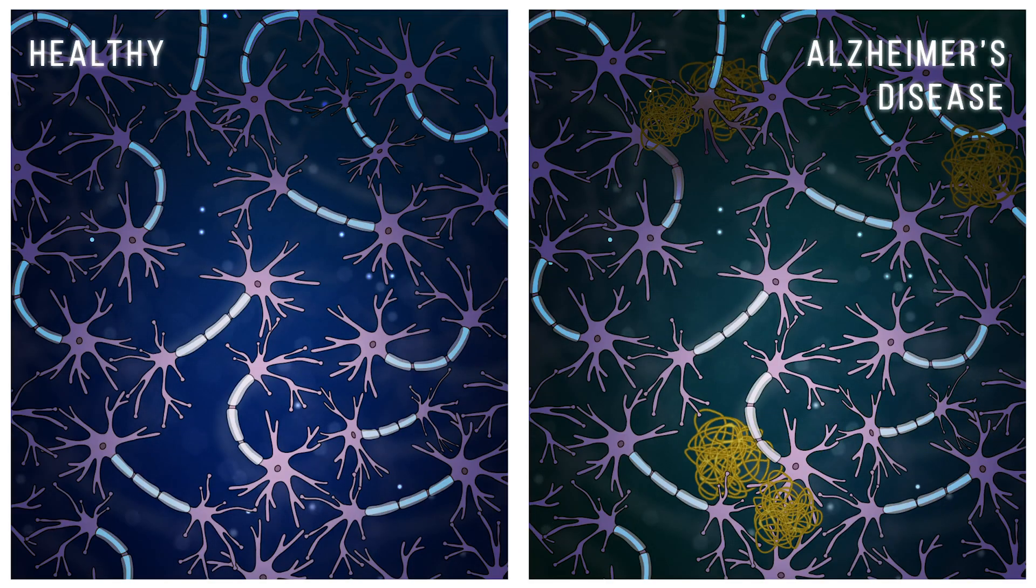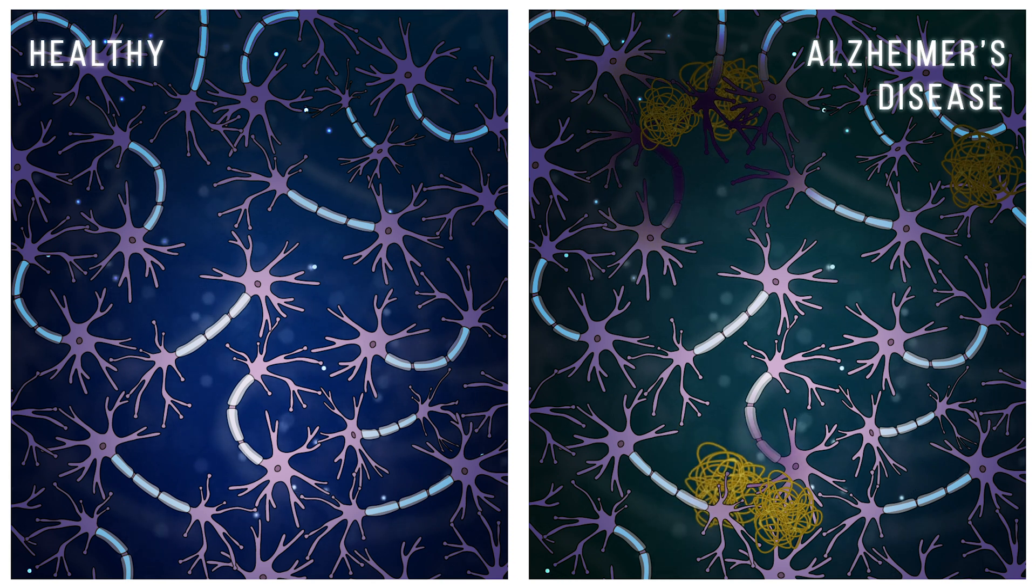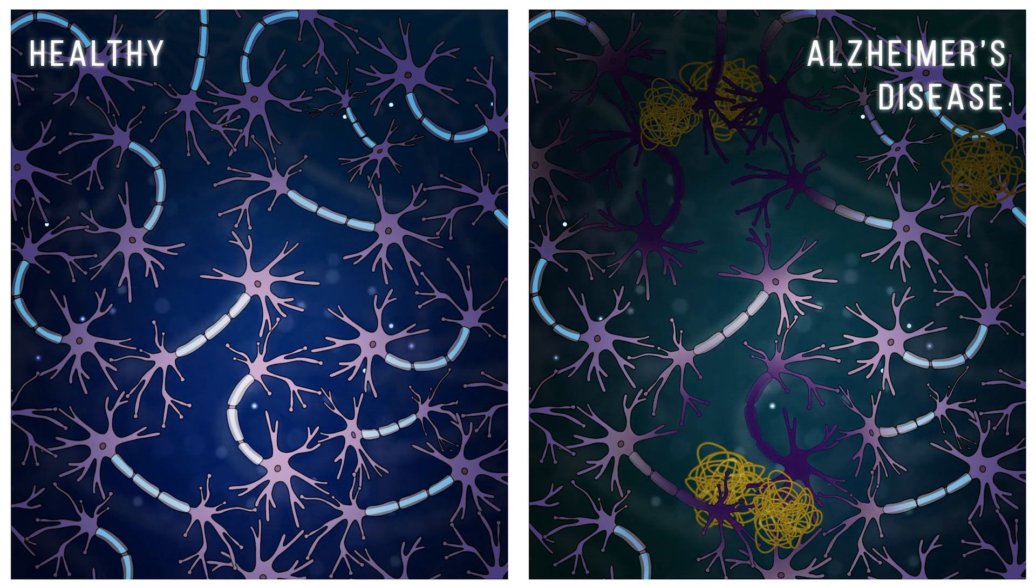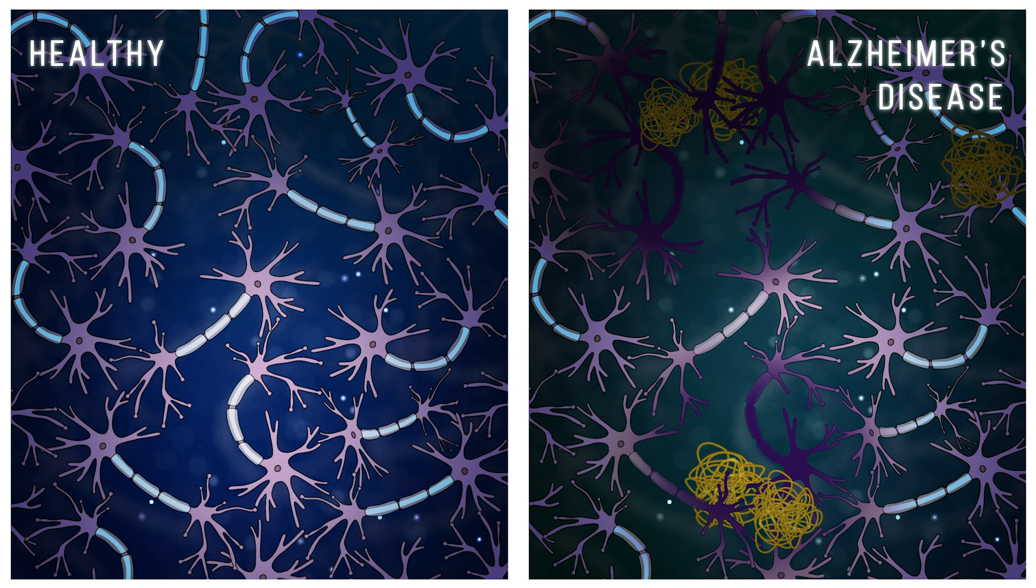In the case of Alzheimer's disease, a reduction in the clearance of beta-amyloid may be contributing to the aggregation of these proteins in tissue, leading to the characteristic beta-amyloid plaques that disrupt cell function and eventually contribute to cell death.